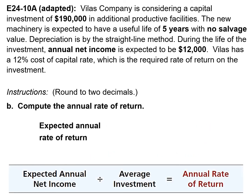The annual rate of return uses accrual accounting data to indicate the profitability of a capital investment. Our annual net income is expected to be $12,000. The investment cost $190,000 and has no salvage value, so the average investment is $95,000, found by taking $190,000 and dividing by 2.